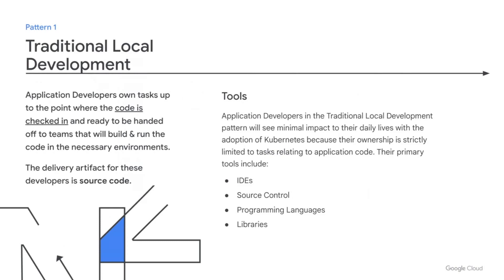The tools these developers typically use haven't really changed too terribly much over the last couple decades. Your app devs will need an integrated development environment or IDE. They'll need some form of source control to collaboratively work on large codebases. They'll need to learn some sort of programming language or maybe a few, and they'll need to get familiar with libraries — both public and private — that they'll be using to build the applications your business needs. This pattern also has a benefit in terms of environment flexibility. Since your app dev team's delivery artifact is source code, it could be run on any number of types of environments: VMs, Kubernetes, serverless, or just about anything.